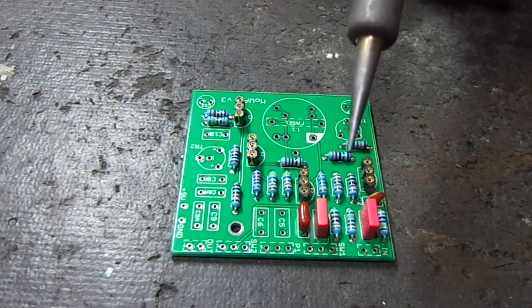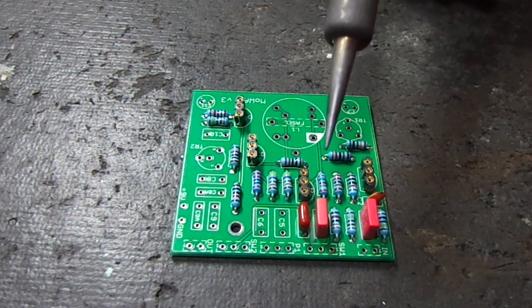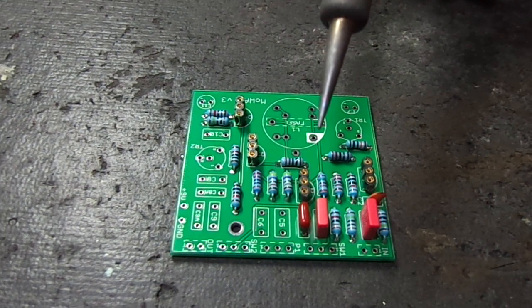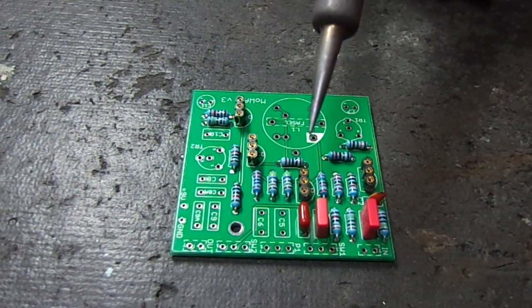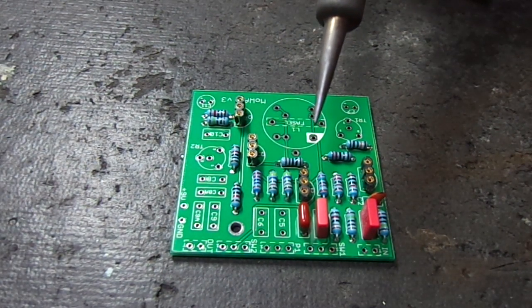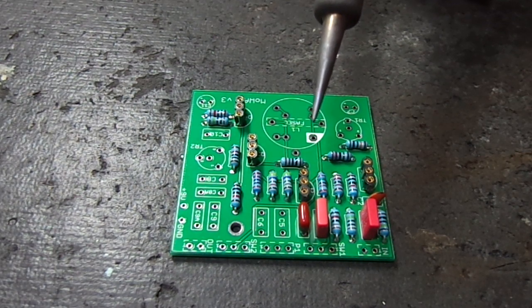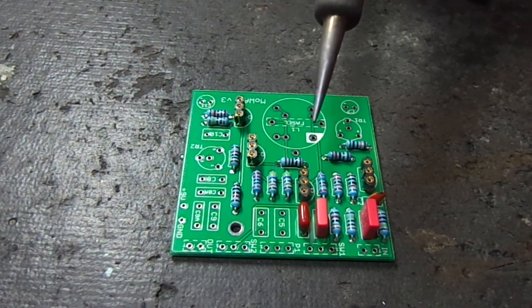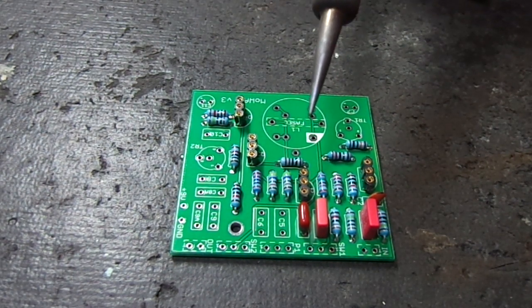The way to do that, I clean my tip by using a scouring pad. I do that between every solder joint. I use a scouring pad as opposed to a wet sponge because of the simple fact that that reduces heat. The scouring pad doesn't.